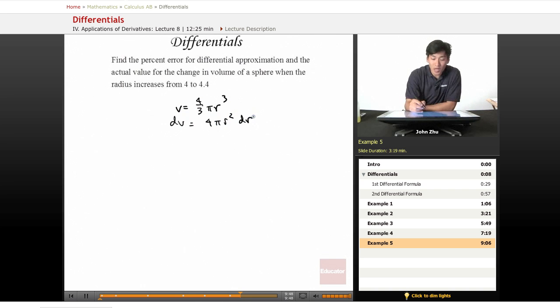We know the change in radius is 0.4, and we know the original radius is 4. We're looking for the change in volume.